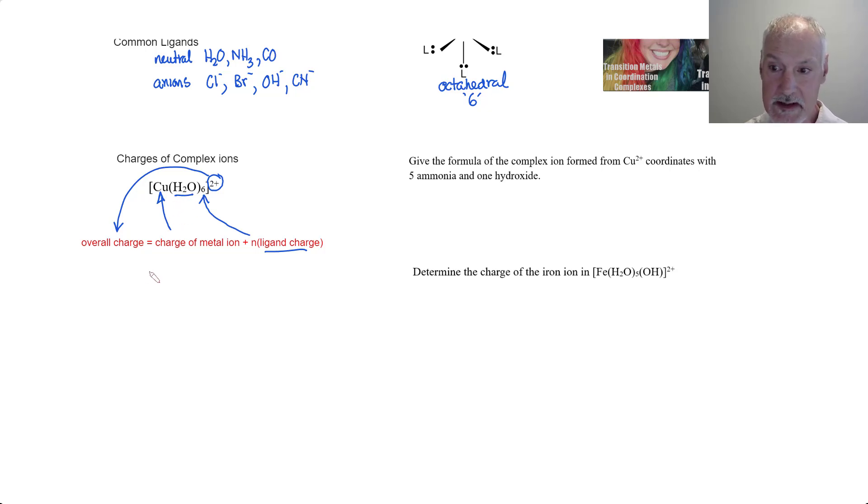In the example I did previously, we saw that copper had a two plus in the diagram. We would take that, we would add the fact that there are six waters, but they're neutral so they're zero. That must then equal the overall charge, which would then be two plus. And that's indeed what you see here.